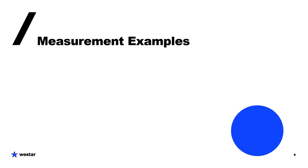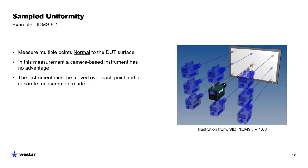Next, we're going to get into some examples of measurements and look at how you would do these with an array-based instrument without motion, and how you would do it with an array or spot-based instrument with motion. The first example is sampled uniformity, from IDMS Section 8.1. This is the basic measurement that everybody does — a nine-point or five-point uniformity on a display. The requirement is that we're measuring multiple points on the DUT surface, and each measurement is made normal, perpendicular to the display surface. Camera-based systems have no advantage here because you really need to move the instrument and center it over each measurement spot. If you're going to do it with a camera-based system, you'd need to move the camera out a great distance — ideally infinity. This is one where a motion-based system has an advantage.